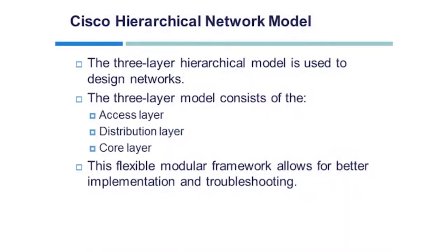Cisco Hierarchical Network Model. The three-layer hierarchical model is used to design networks and consists of access, distribution, and core layers. This flexible modular framework allows for better implementation and troubleshooting. It is ideal for small to medium-sized networks up to about 5,000 users, but is not recommended for large networks above that number. Basically, different offices or departments connect to access switches installed in those rooms, which connect to distribution switches in hallways or on different floors, which in turn connect to core switches in the data center or server room.